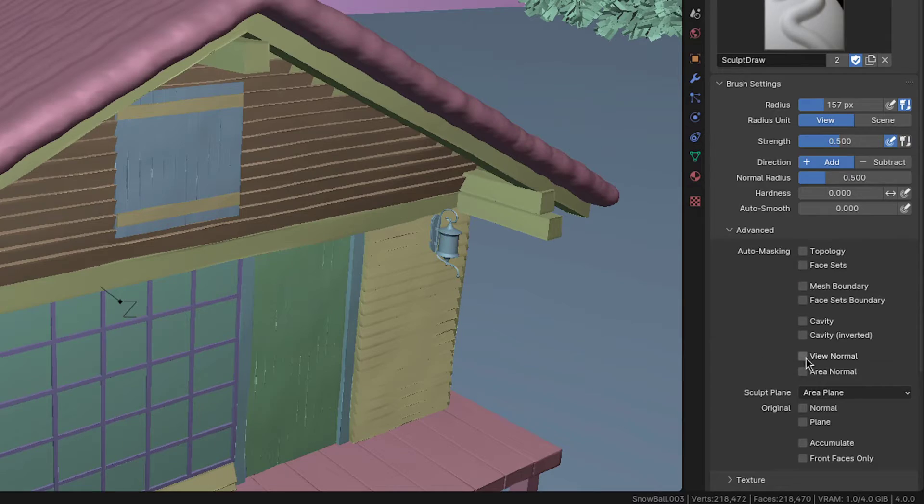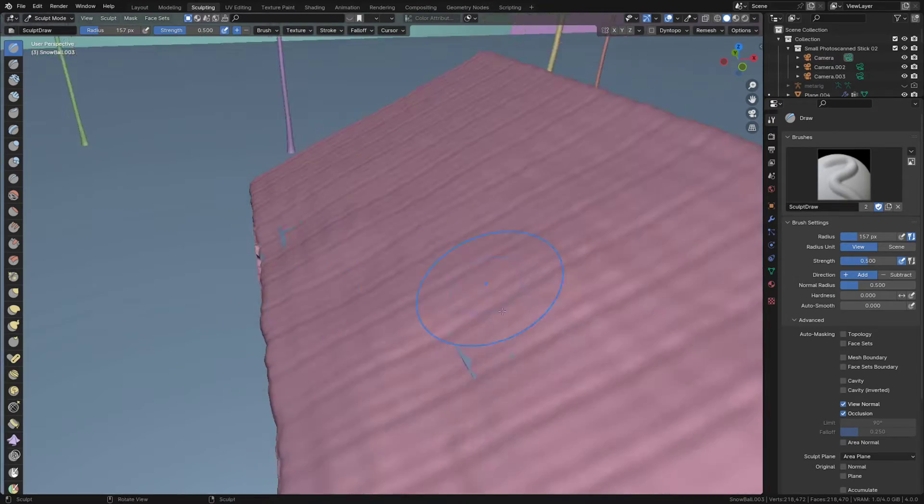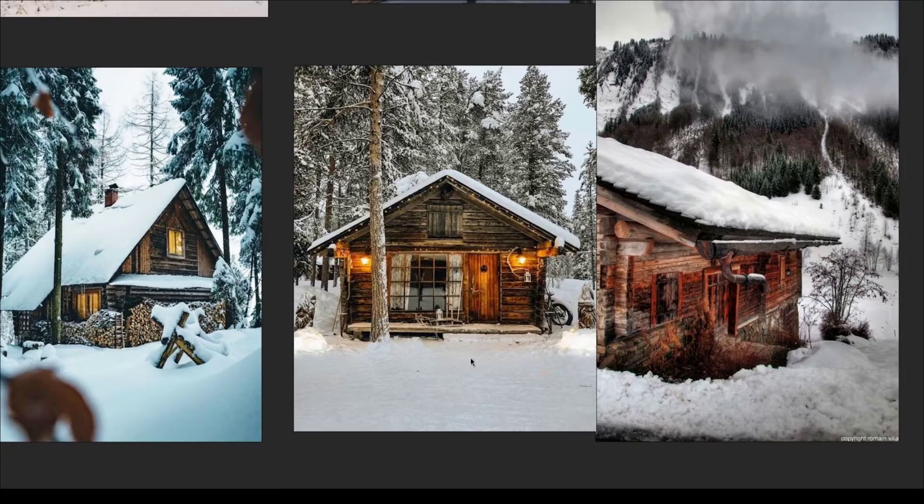But before we do, we have to fix the brush settings. Just enable the view normal and occlusion checkboxes and that will prevent the brush from affecting both sides of the snow. So now we can sculpt it without a problem. While doing so, I suggest looking at some references of snow buildup to better match it to reality.